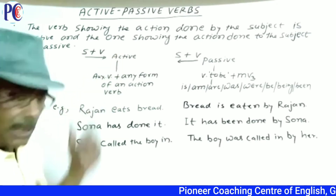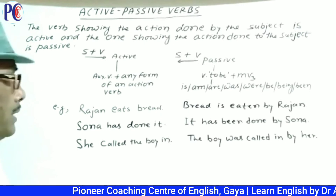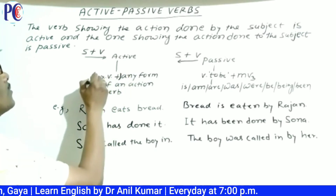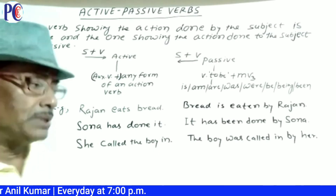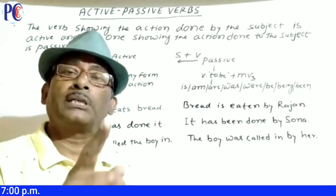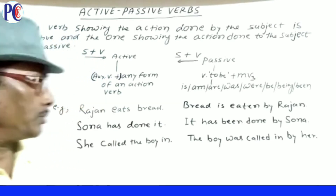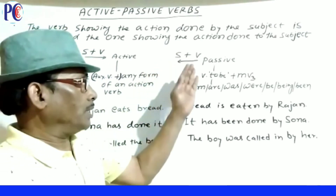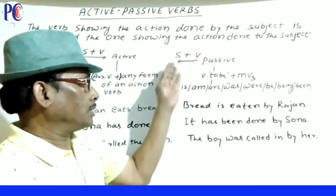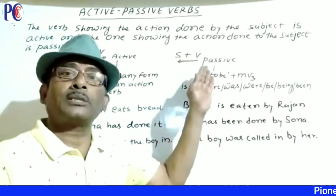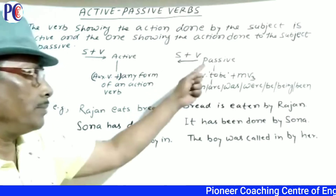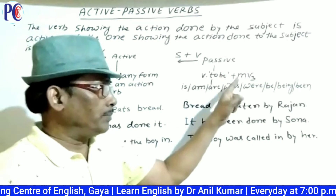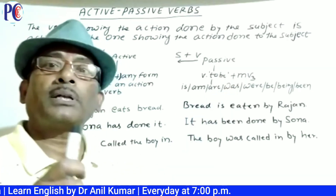In active voice, there is an auxiliary verb or without auxiliary verb, an action verb will come. In present indefinite and past indefinite positive sentences, passive will not come. When the action of the subject is clear — subject plus verb — it will be passive. For passive, the verb-to-be plus main verb in past participle (V3) form is used.